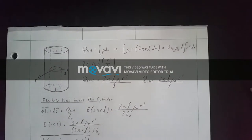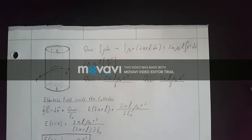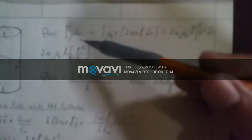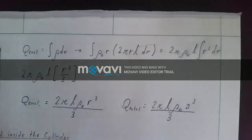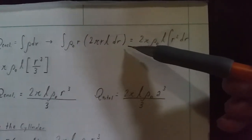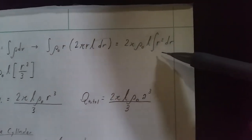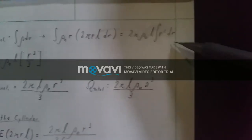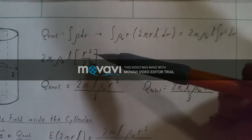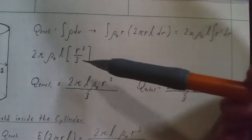Hi, this is Jonathan Warrior, and I'm going to show you how to find the electric field inside and outside a cylinder with a non-uniform density. We start with q enclosed equal to the integral of rho times dv. That becomes the integral of rho naught times r times 2 pi r times l times dr, which equals 2 pi rho naught l times the integral of r squared times dr. With that integration, you end up with 2 pi rho naught times l times r cubed over 3.